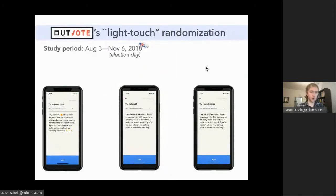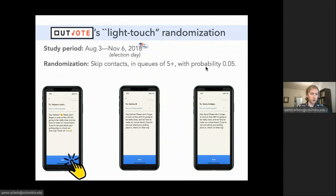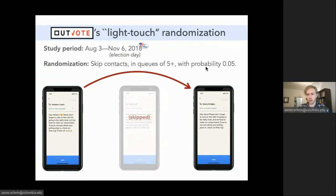During the three months before the midterm elections, Outvote implemented a light touch randomization scheme, hoping that it would allow them to assess the causal effect of their users' messages on turnout. For queues of length five or greater, the app would randomly skip contacts in the queue with a small probability, 0.05. So a user would click Send, and then instead of immediately getting taken to the next person in the queue, the app would first flip this coin. And with a 5% chance, the app would actually skip that person in the queue.